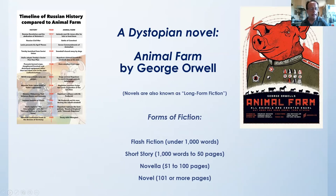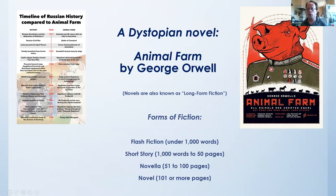As we will see in this class, Animal Farm is also an allegory, and there are many incidents in the history of Russia and the Soviet Union that match up with incidents and characters in Animal Farm. But let's talk about what a novel is. There are various forms of fiction: there is flash fiction, which is usually under 1000 words; there is the short story, which is 1000 words to about 50 pages; the novella is roughly 51 to 100 pages; and a novel is almost always more than 100 pages.